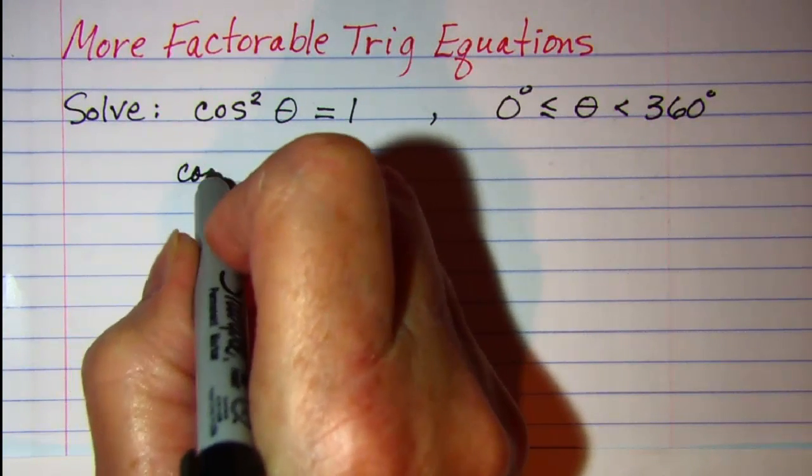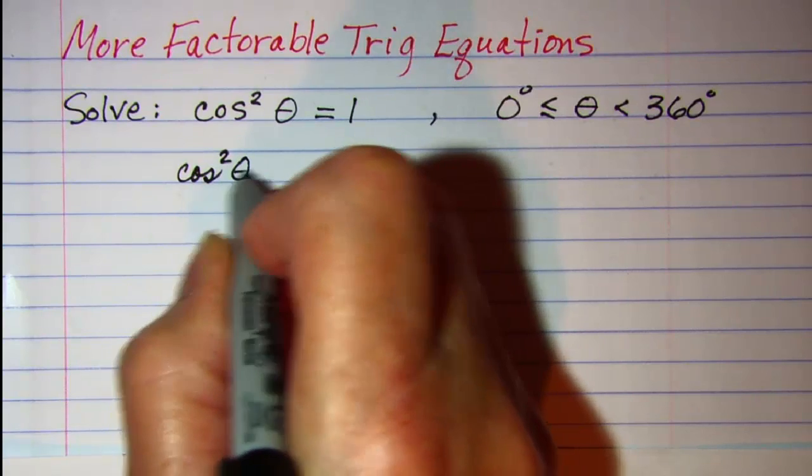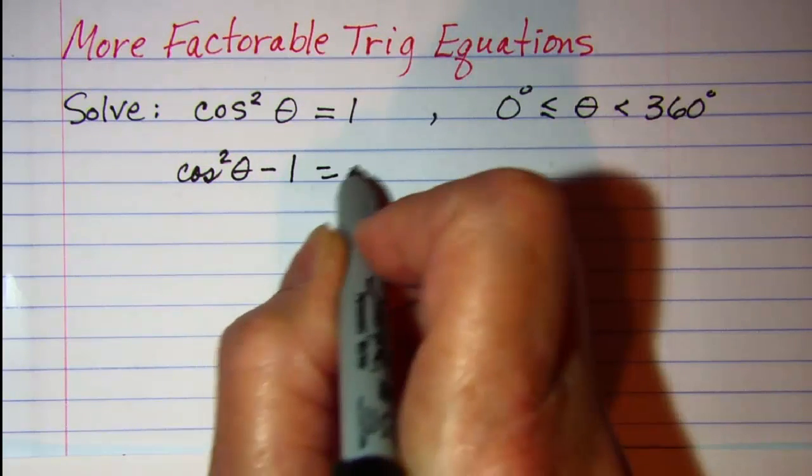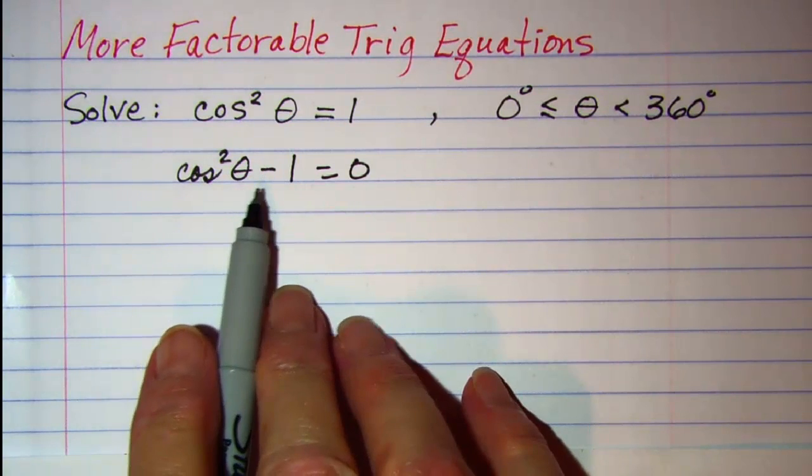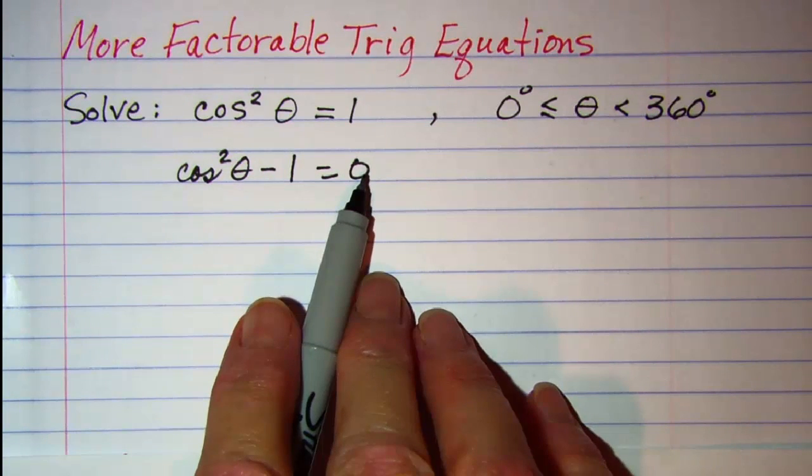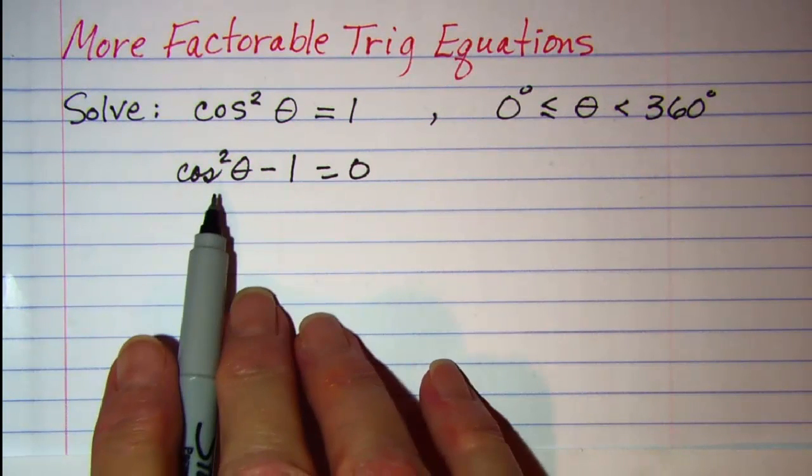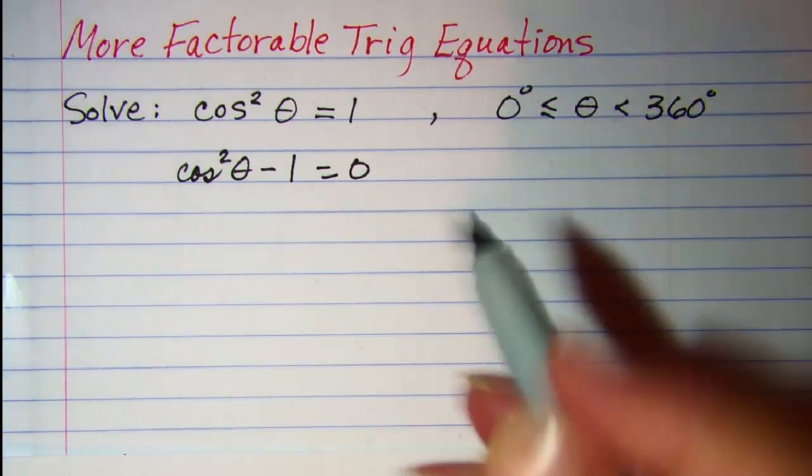So I have cosine squared theta minus 1 is equal to 0 and then once I have everything over here and a 0 on this side I can factor this like the difference of squares.